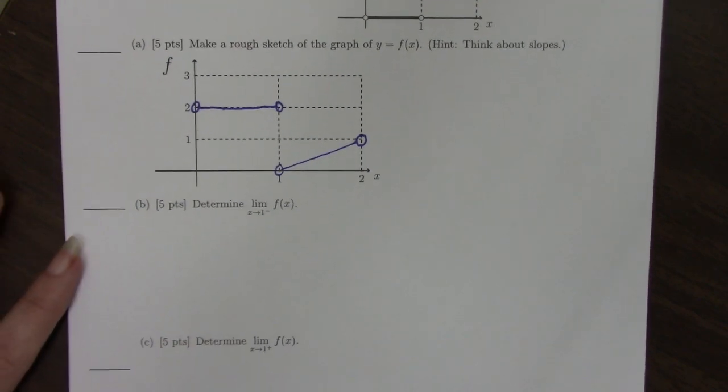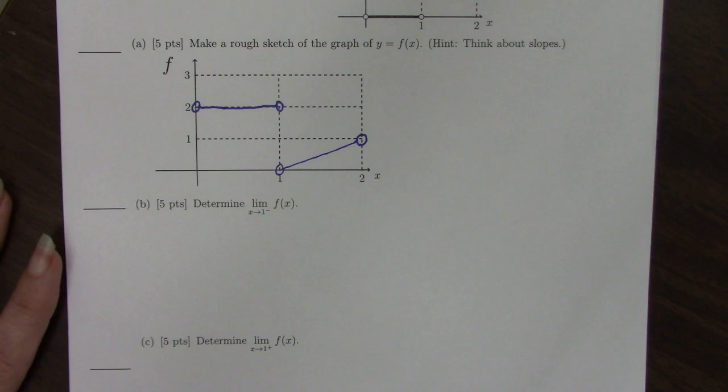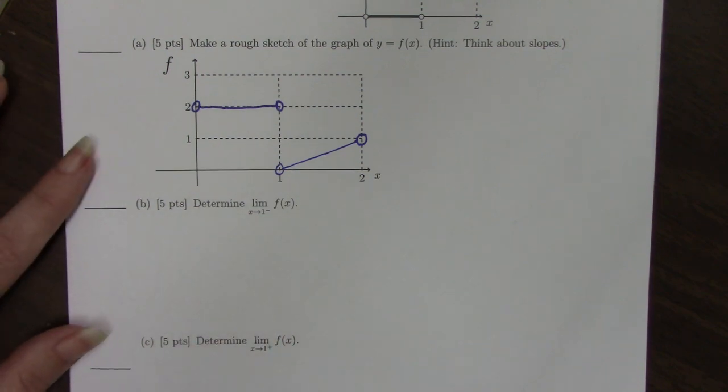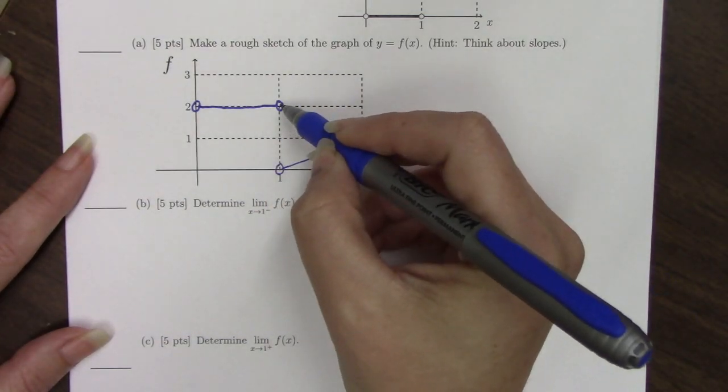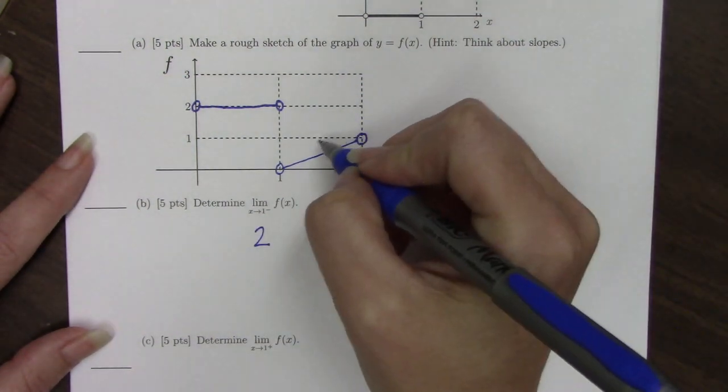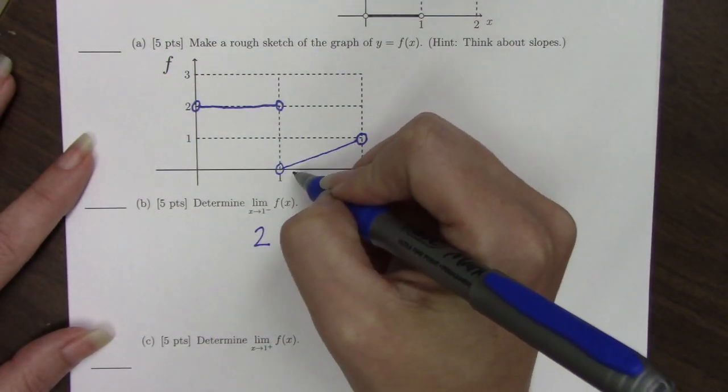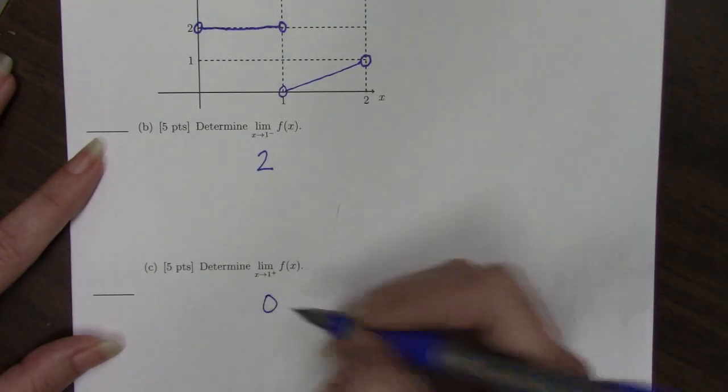The next two parts of the question simply ask us to read our graph and answer questions about these limits. What is the limit as x goes to 1 from the left? Here's 1 coming from the left side. We see that the limit is 2. If we want to look at what's happening when we approach 1 from the right, as we're coming from the right, we can see that our limit is 0.